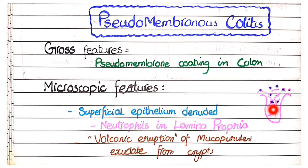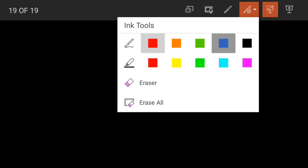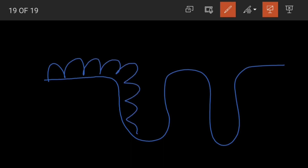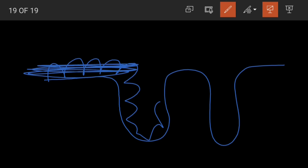To explain: this is the epithelial lining of the colon and these are the crypts. This epithelial lining is denuded by the destruction caused by pseudomembranous colitis. Firstly you see denudation of this epithelium, and secondly you see neutrophils in the lamina propria.